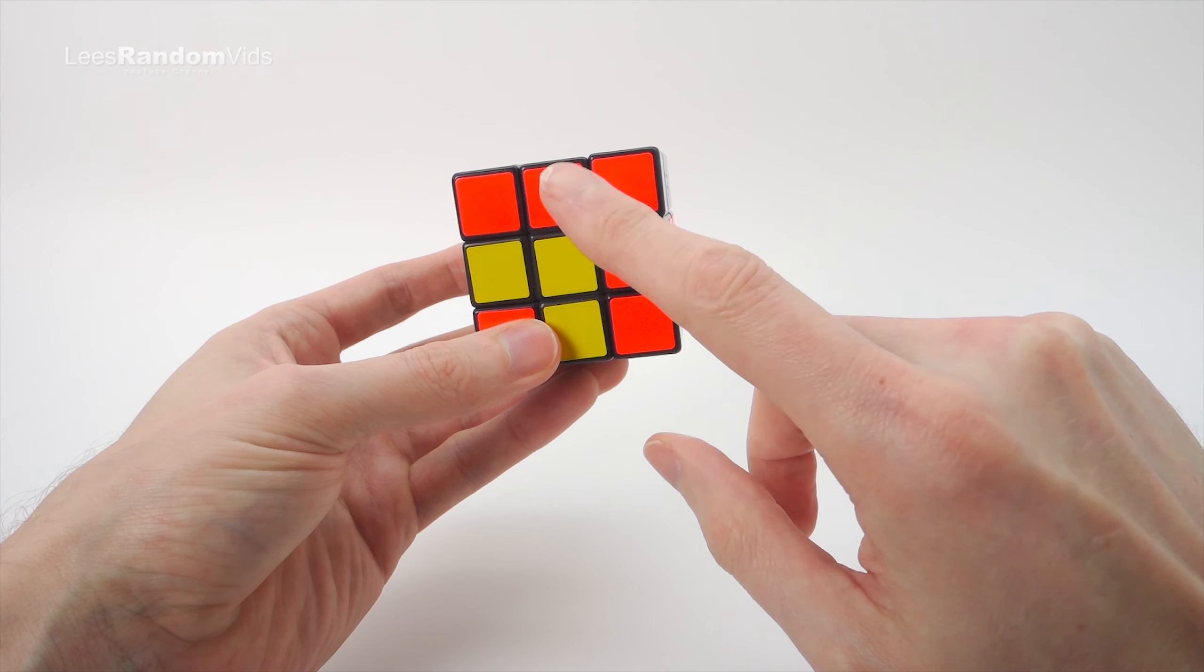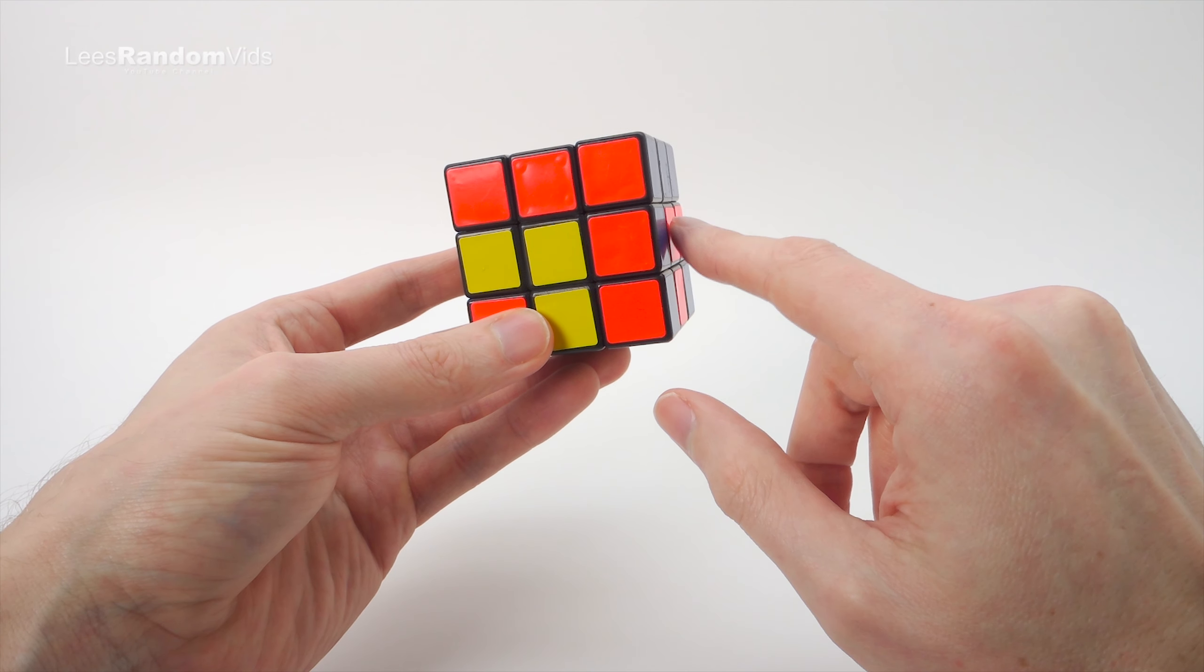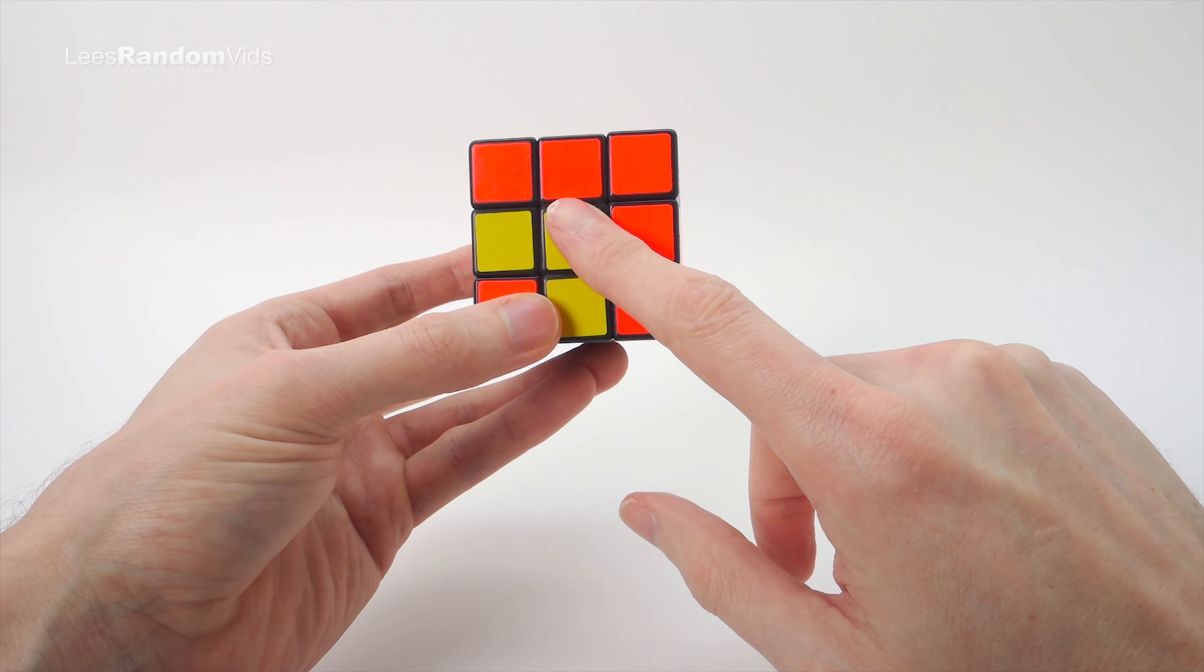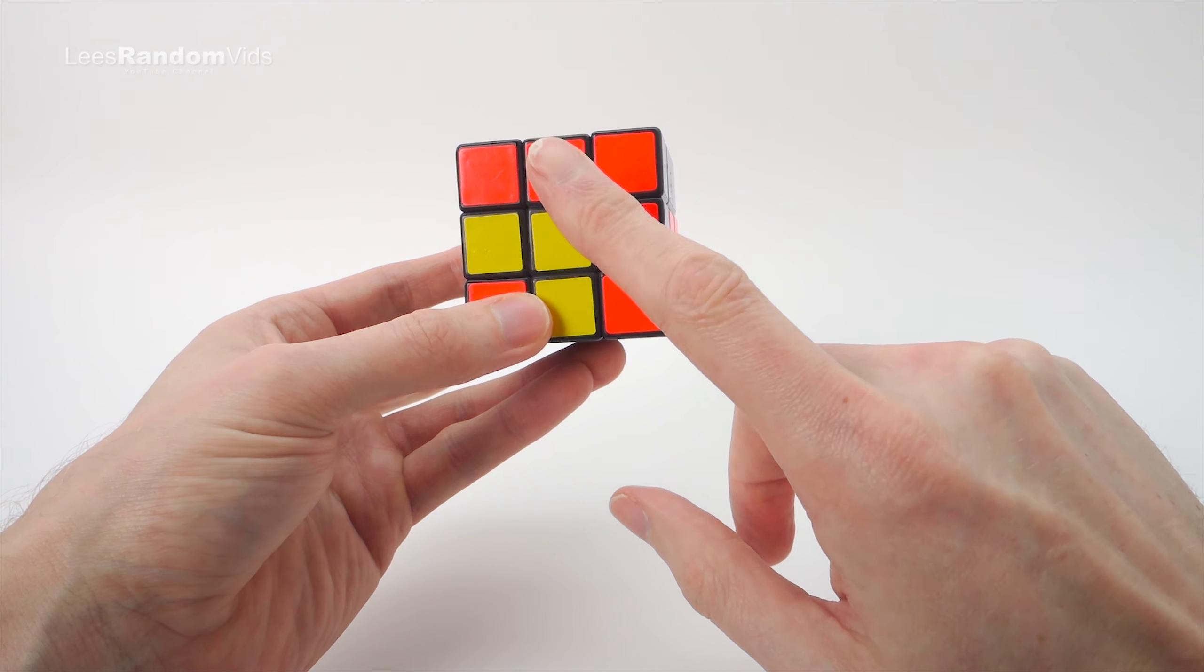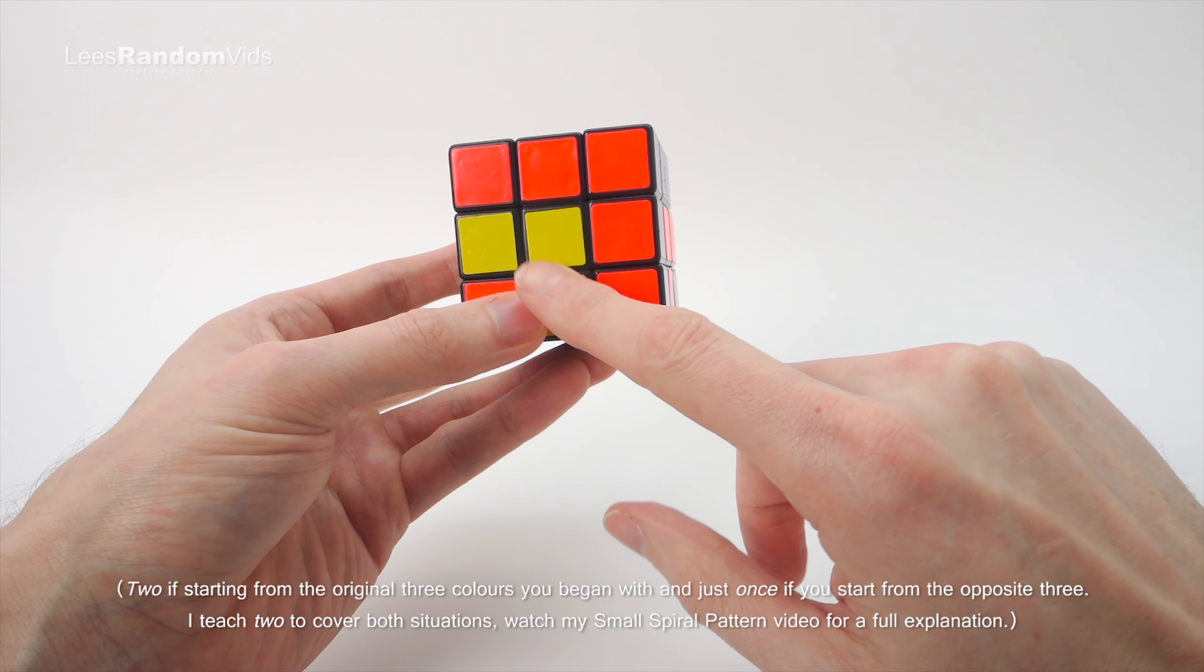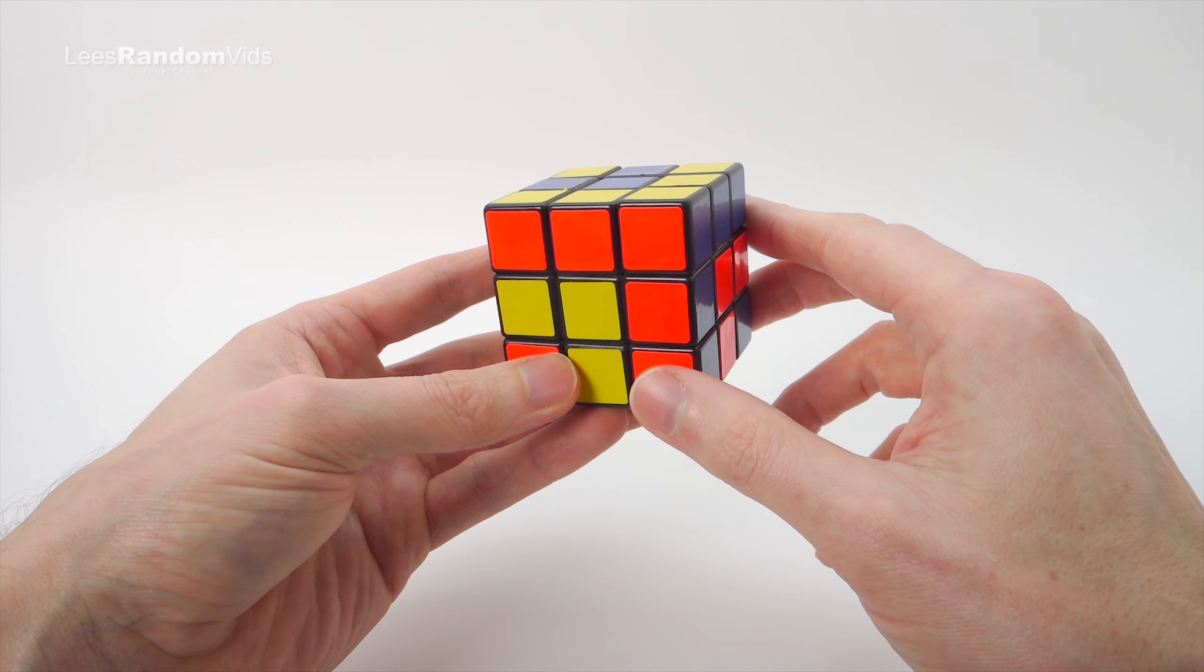And as before, rather than learning an algorithm to undo this, I prefer just to use the same algorithm if possible. And we can just do the same algorithm two more times, and that will undo this and set it back to a completed Rubik's Cube.